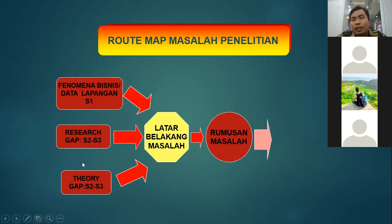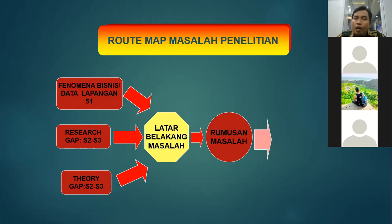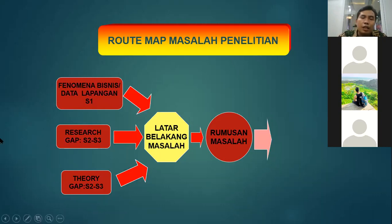Seringkali itu kebanyakan mahasiswa mengambil objeknya dulu — misalnya futsal, pabrik jamur. Padahal di sini itu enggak ada objek penelitian. Itu di metode penelitian. Itu adalah objek. Yang kita susun adalah teori-teorinya dulu, menjadi kenapa kita meneliti variabel itu.